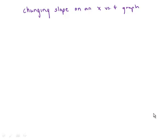Changing slope on an X vs. T graph. So suppose now we have our position axis and our time axis, and suppose we have motion of a particle that looks like this. Looks kind of like a parabola.